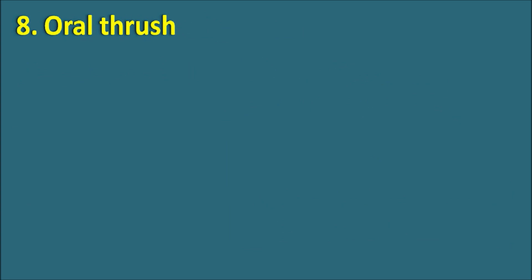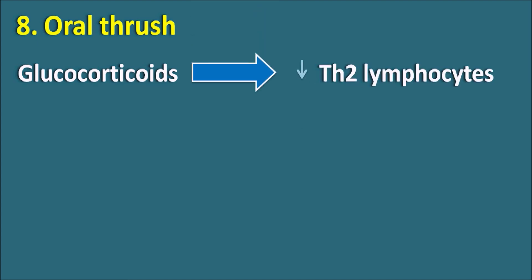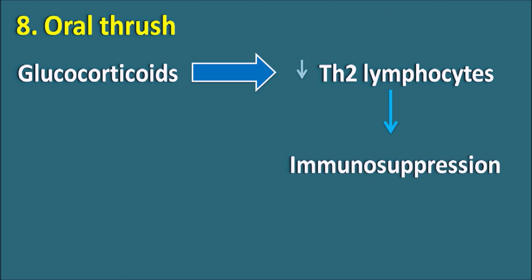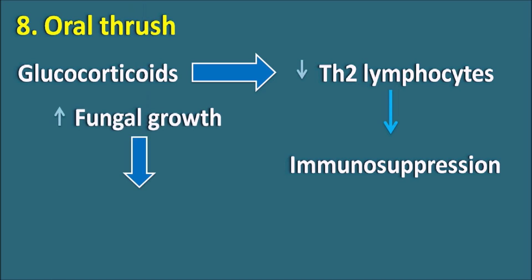The eighth side effect is oral thrush. Glucocorticoids act as immunosuppressants by inhibiting Th2 lymphocytes, which are required for immunity development. When these lymphocytes are reduced, immunity is suppressed. When these drugs are given by the inhalation route, they can increase fungal growth within the esophagus, resulting in oral candidiasis. This causes hoarseness, soreness in the voice, and slurred speech. This side effect is particularly observed with the inhalation route of administration.